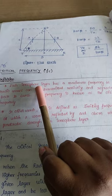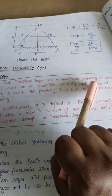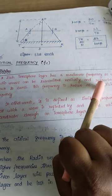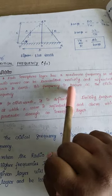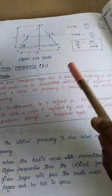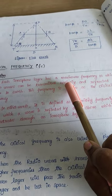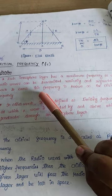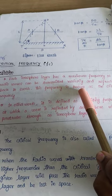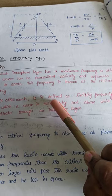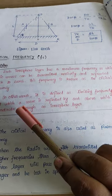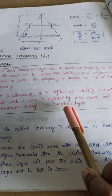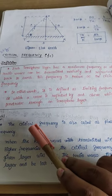Each ionosphere layer has a maximum frequency at which the radio waves can be transmitted vertically and refracted back to the earth. This frequency is known as the critical frequency. It is also defined as the limiting frequency at which the wave is reflected, and above which it penetrates through the ionosphere layer. The other name for critical frequency is plasma frequency.